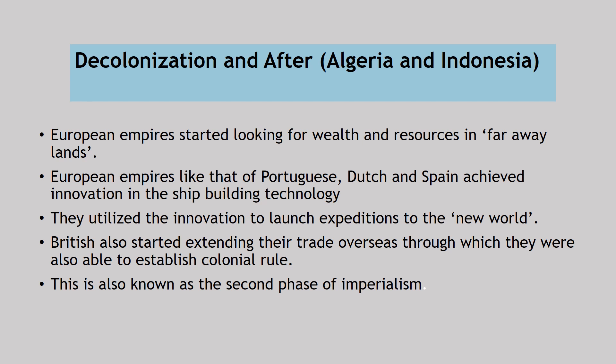They were able to extend trades to Asia and Africa — the capital and cotton textile trade — which eventually converted into European imperial overseas rule. They started with precious metals or cotton textile business, but slowly they captured the particular areas where they used to do business. Later on, the British also started extending their trade overseas, through which they were able to establish colonial rule.